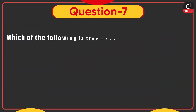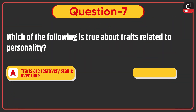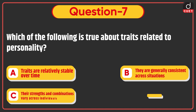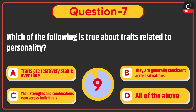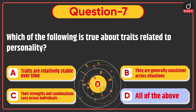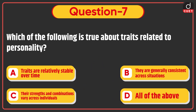Next question: which of the following is true about traits related to personality — traits are relatively stable over time, they are generally consistent across situations, their strengths and combination vary across individuals, or all of the above? The correct answer is option D: all of the above.